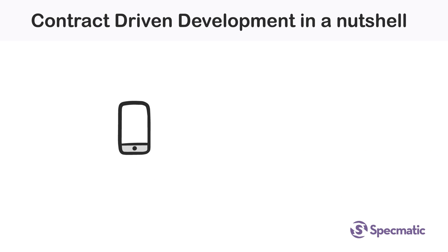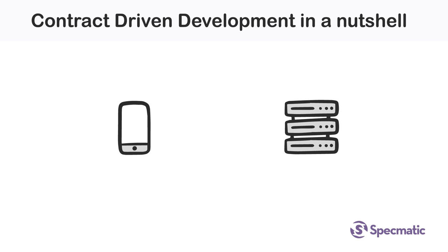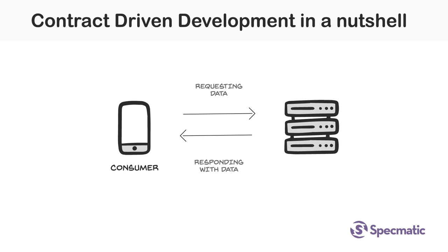Let's say we have a mobile app which is dependent on a server. The mobile app requesting data is called the consumer. The server which responds with data is called the provider.